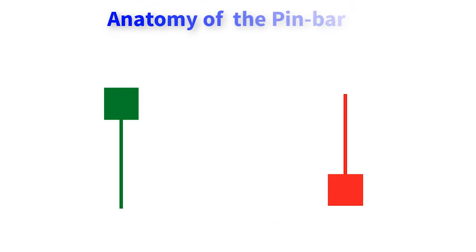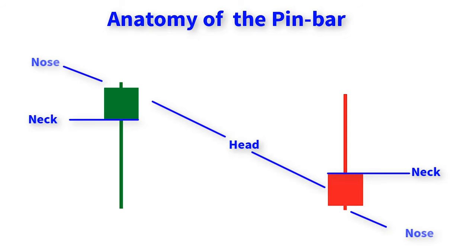Here's the anatomy of the pin bar. As we can see, this is the head, the neck, the nose, and here comes the tail or leg.